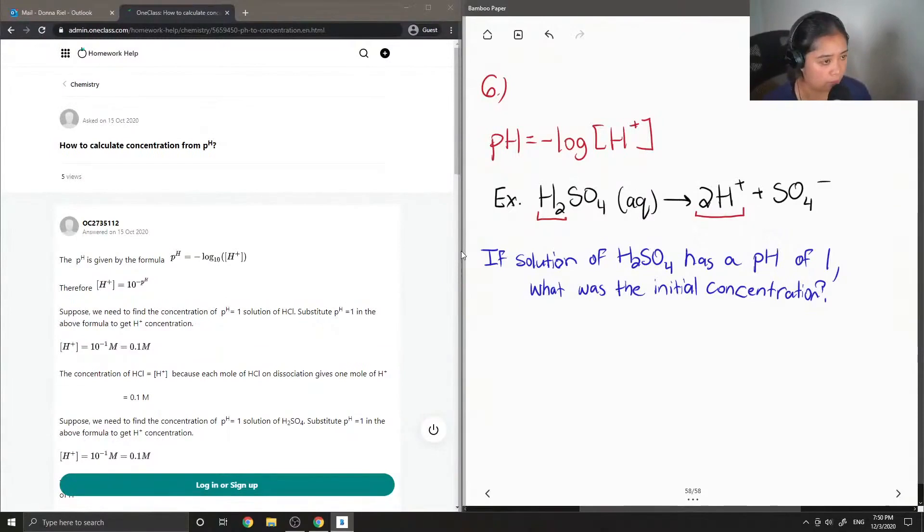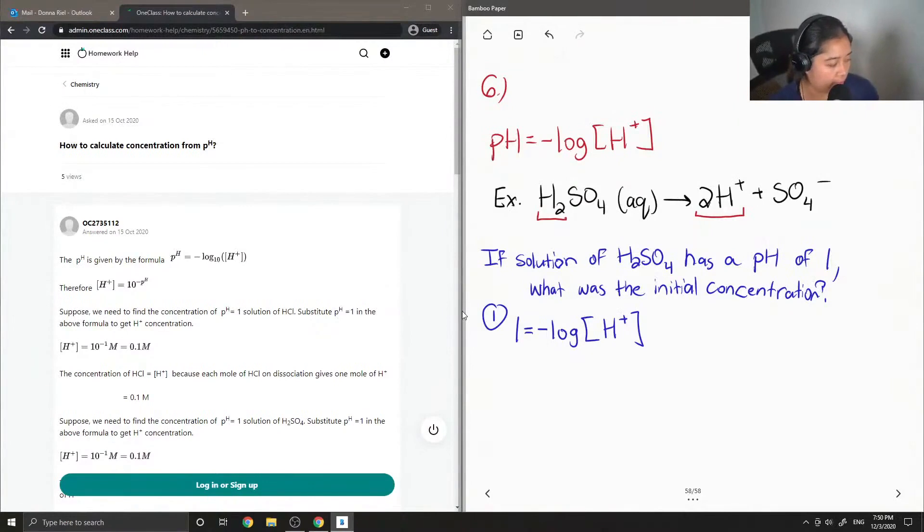What was the initial concentration? So, the first thing we have to do is plug in the value of 1 as our pH. And this is equal to negative log of the concentration of the protons in the solution. And now we just have to solve for H+.